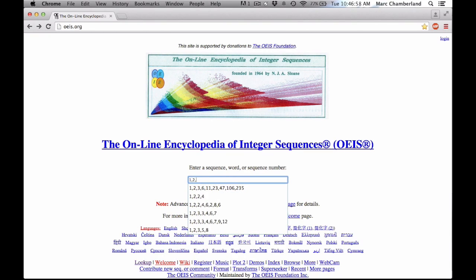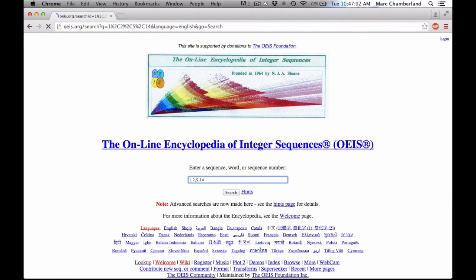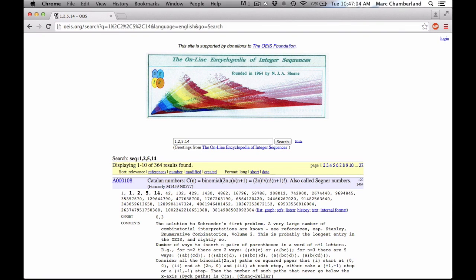Searching for 1, 2, 5, 14 produces over 350 sequences. We find that our polygon problem matches the Catalan numbers whose general formula is given here.